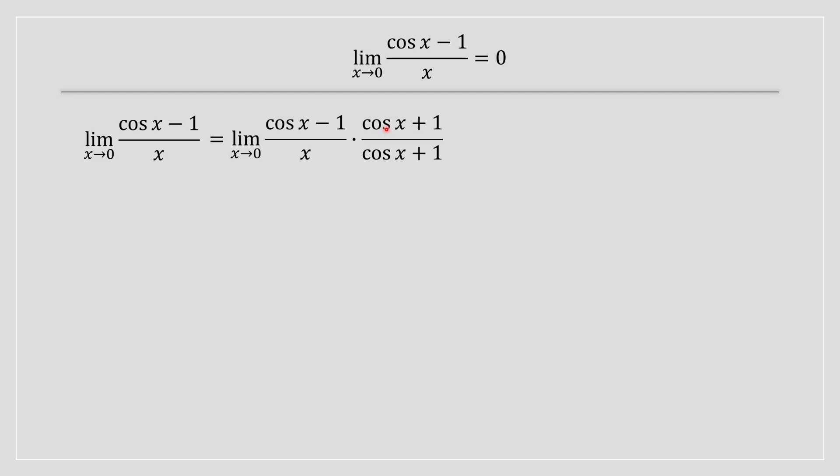The thing we're going to introduce is cos x plus 1 in the numerator and denominator respectively. The reason for this is because in the numerator we're going to have a difference of squares, and you're going to see why in a moment. So cos squared of x minus 1 in the numerator and then we've got cos x plus 1 in the denominator.